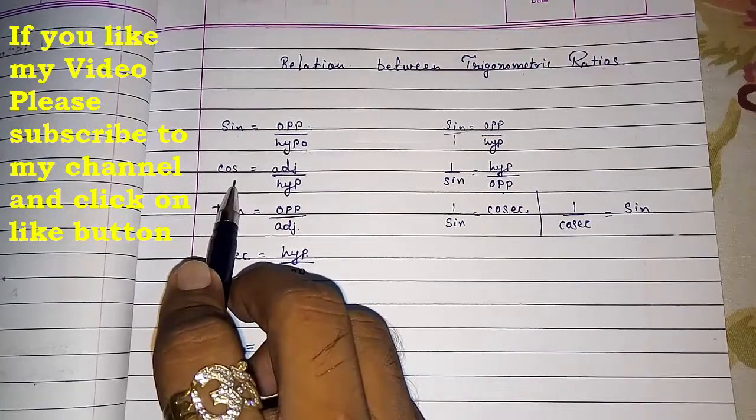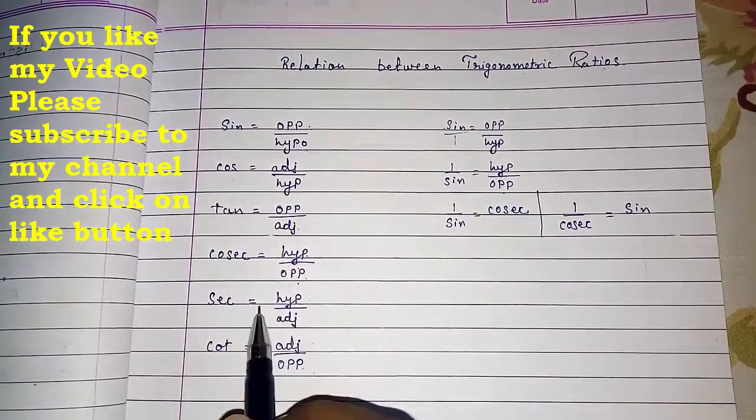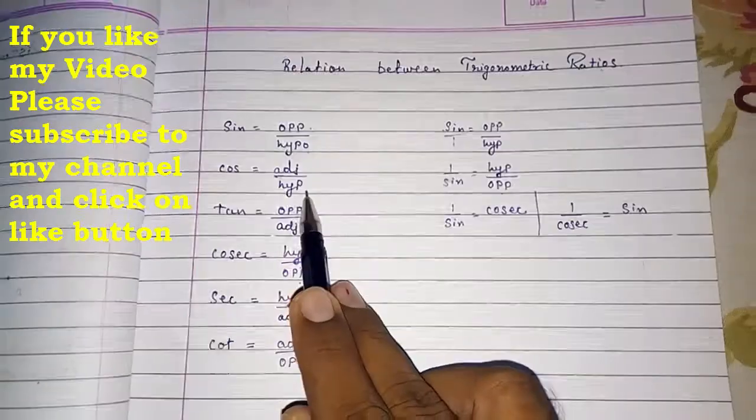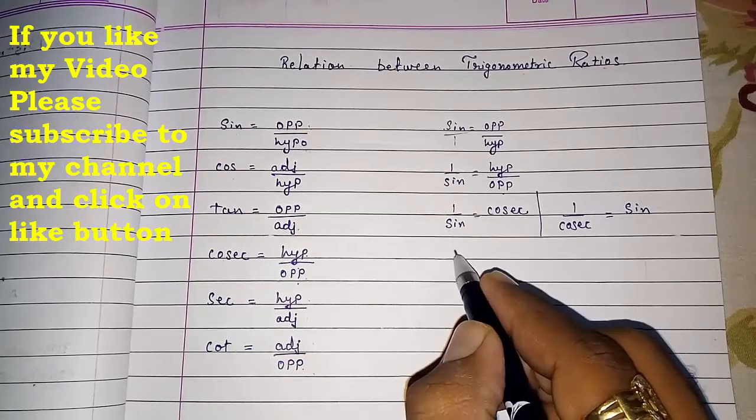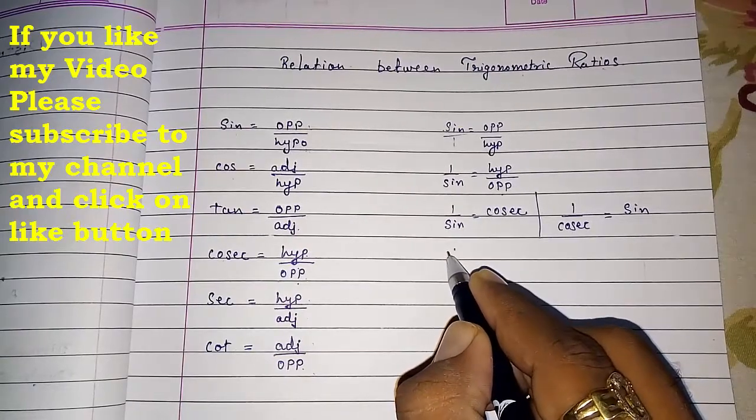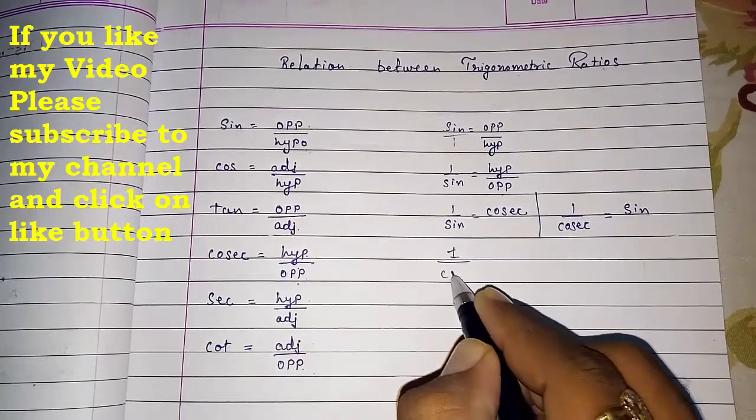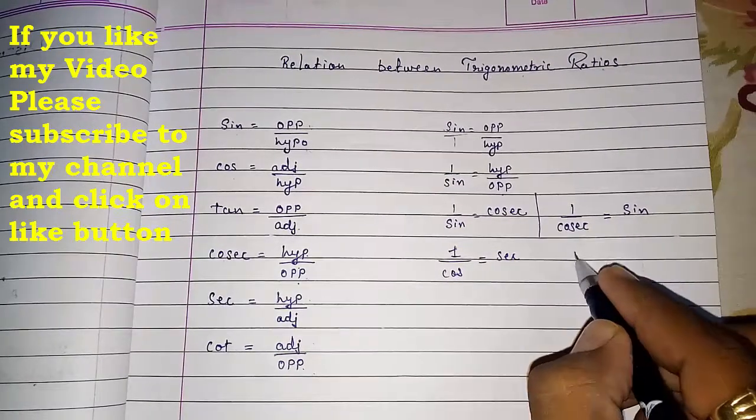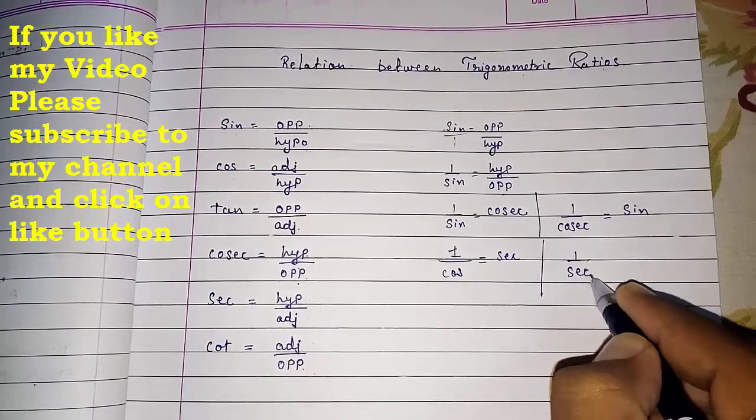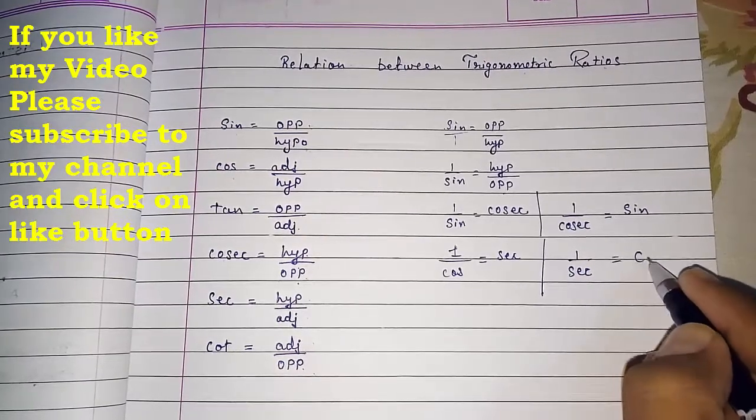Then look now the relationship of cos and sec. Cos is adjacent by hypotenuse and sec is hypotenuse by adjacent. So directly I am telling you that one by cos gives you sec and one by sec will give you cos.